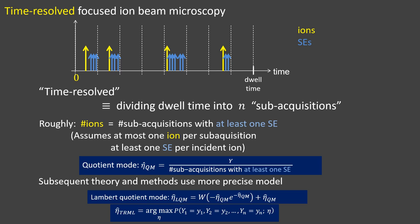Our two other time-resolved methods called LQM and TRML respectively use a more precise model. More importantly, we account for the probability of an incident ion resulting in zero detected secondary electrons.